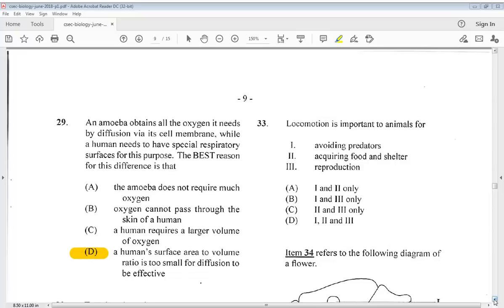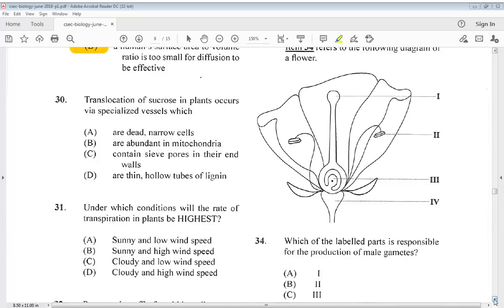Let's look at our final question. 30 says translocation of sucrose in plants occurs via specialized vessels which are dead narrow cells, are abundant in mitochondria, contain sieve pores in their end walls, or are thin hollow tubes of lignin. So the answer for 30 would be C. So there you have it. We have come to the end of the CSEC Biology, May, June 2018, paper 1. So stay tuned for part 2. Thanks for watching.